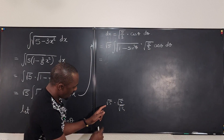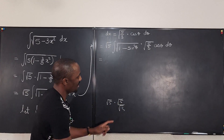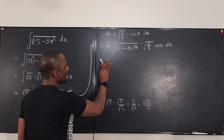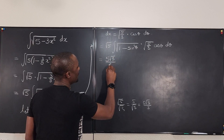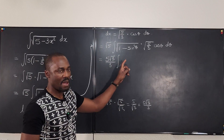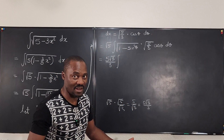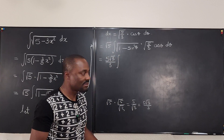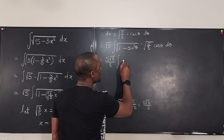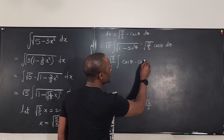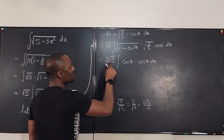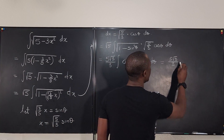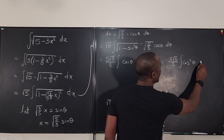So those two give us 5 over square root of 3, which is 5 rad 3 over 3. The integral becomes — remember 1 minus sine squared theta is cosine squared theta, and the square root of cosine squared theta is cosine theta — so we have cosine theta times cosine theta d theta. This gives us 5 rad 3 over 3 times the integral of cosine squared theta d theta.